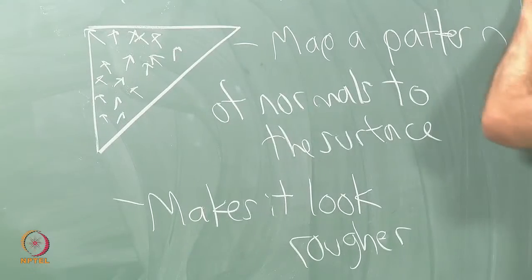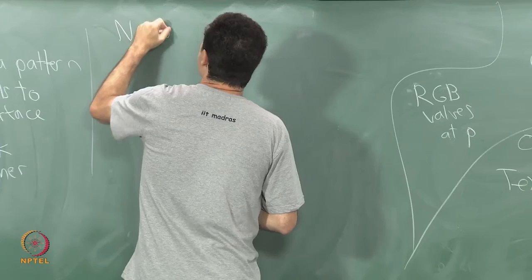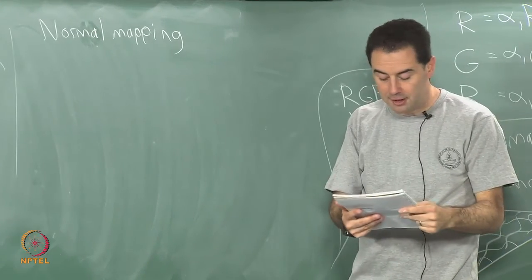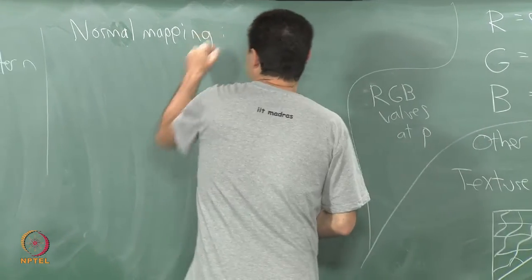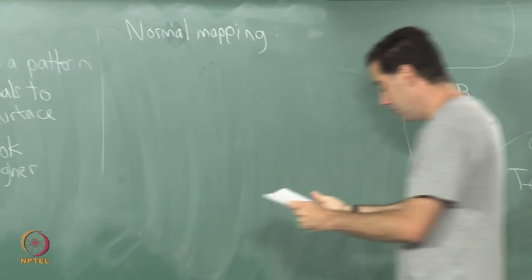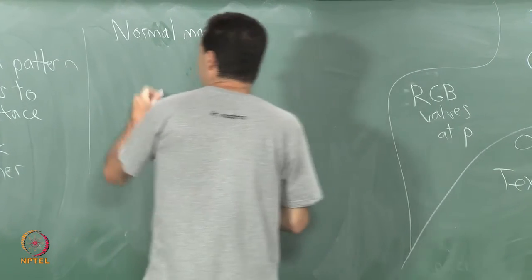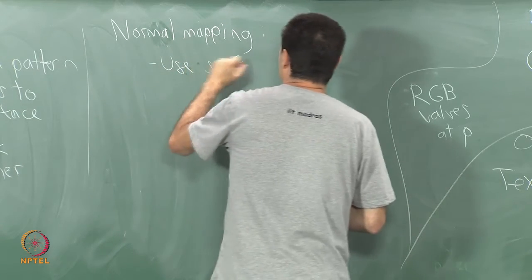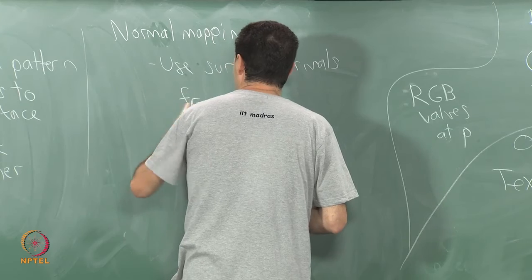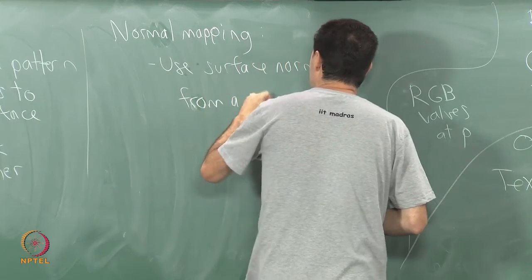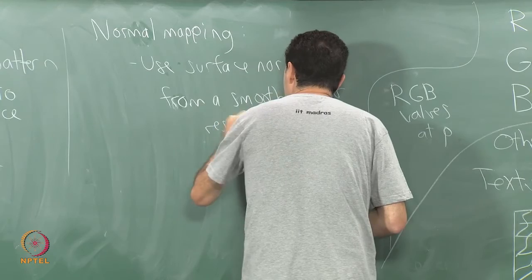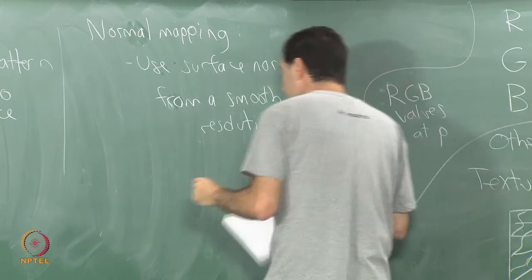Related to this is more generally normal mapping. I suppose I can consider bump mapping as one special case of normal mapping, but I am going to give a different particular case. They are all playing tricks with the normals. What I can do is use surface normals from a smooth higher resolution surface.